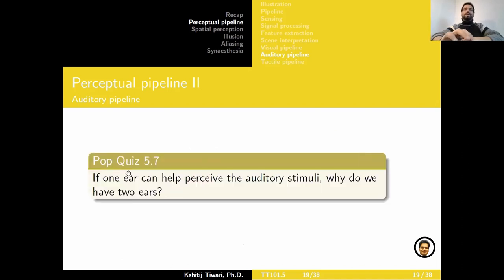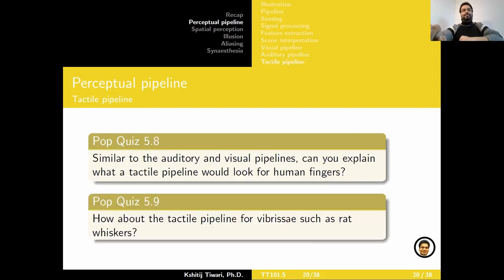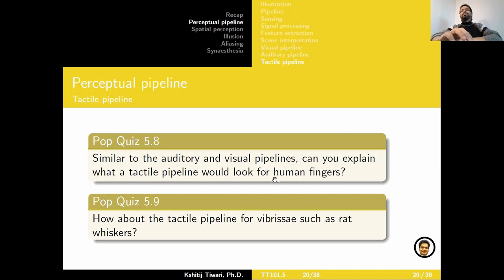Similar to the visual pipeline, the question for you is: if one ear could perceive all of this auditory stimuli, why do we have two ears? And then a brain teaser: we've looked into the audio-visual pipelines, which are by far the most well-studied sensory pipelines, especially in humans. Can you explain what a tactile pipeline would look like for human fingers? We're able to touch and perceive the environment, grab things, feel temperature. What would that pipeline look like? And can you build on it — if we had a whisker-like sensor for navigation, how would the perceptual pipeline look?